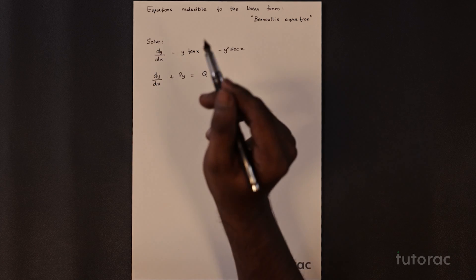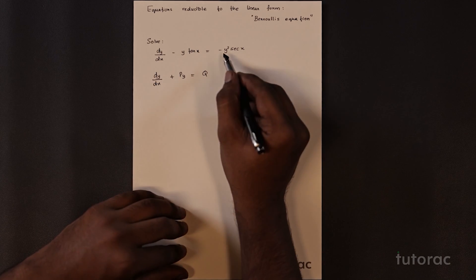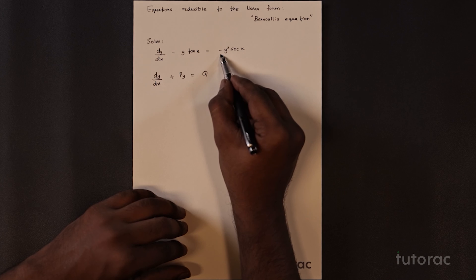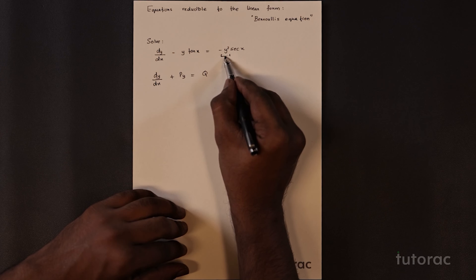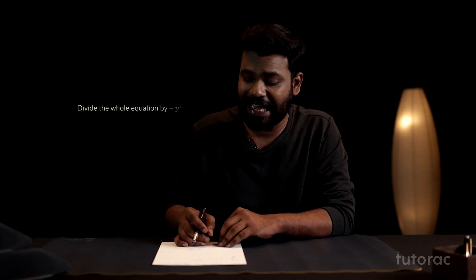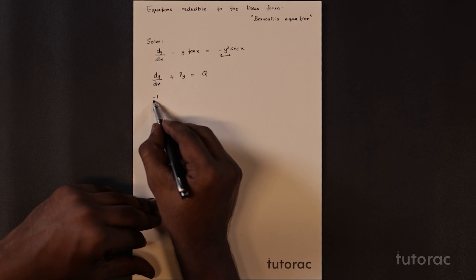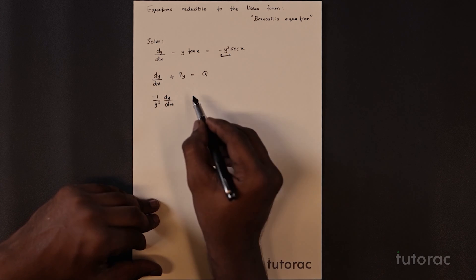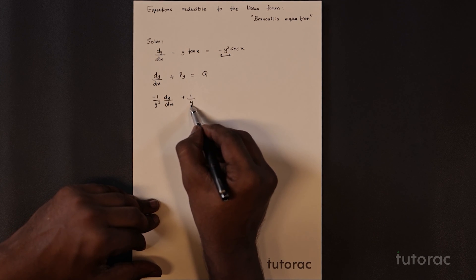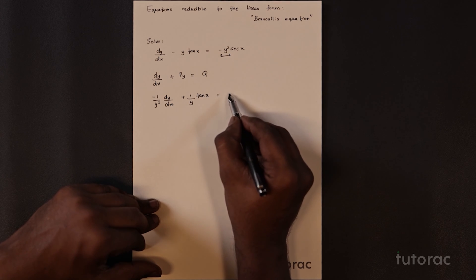So what can we do? On the RHS there is a minus y² extra. To remove it, we divide the whole equation by minus y². Doing so gives: minus (1/y²)·dy/dx plus (1/y)·tan(x) equals sec(x). We have now eliminated minus y² from the RHS — it is completely gone.